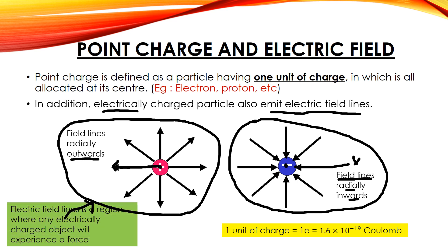Electric field lines represent a region where any electrically charged object will experience a force. For example, if I place another positive charge particle in the field lines of the first proton, it will experience a force because it interacts with the field lines emitted by that proton. That's the idea of the field lines.